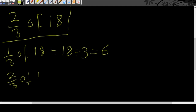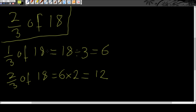So two-thirds of 18 is going to be equal to what one-third of 18 was — which we found was 6 — and we multiply that by 2. Six times two gives us 12. So we found two-thirds of 18 equals 12.